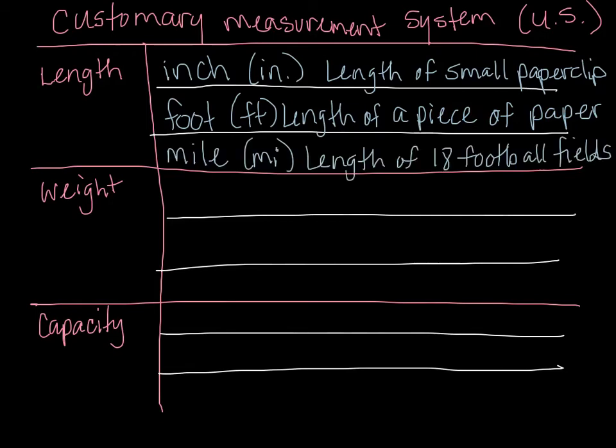And finally, the mile. The mile is the length of 18 football fields — that's quite a long way, a little longer even than the kilometer which was only 10 football fields. If you wanted to run a mile, you'd have to run the length of 18 football fields. To understand a mile: if I were to run from the front of the high school all the way down to the wellness center at the community center, that's a mile.